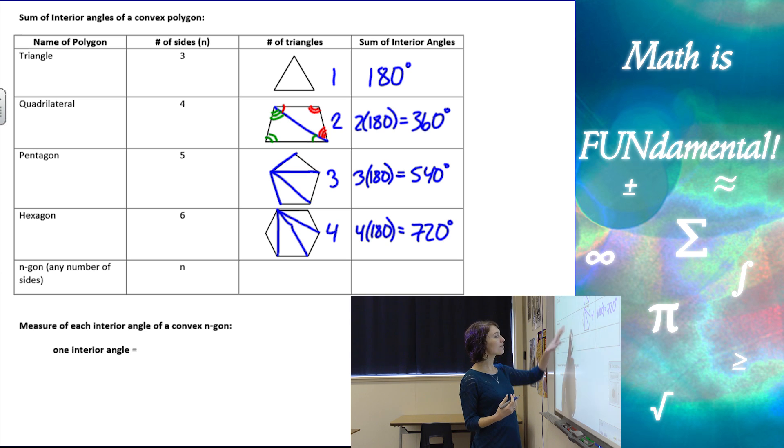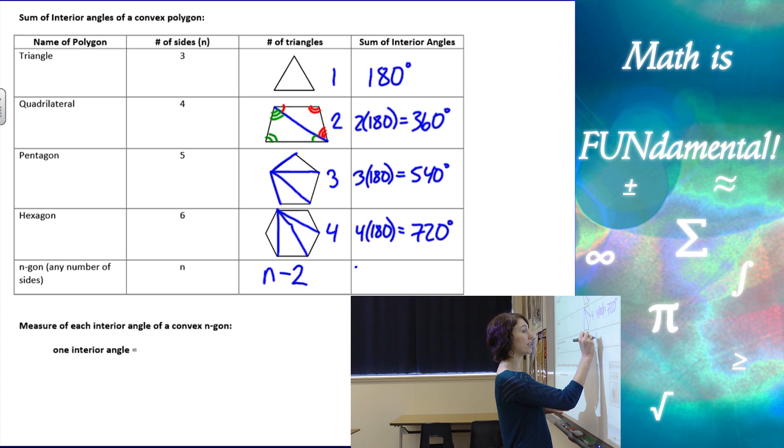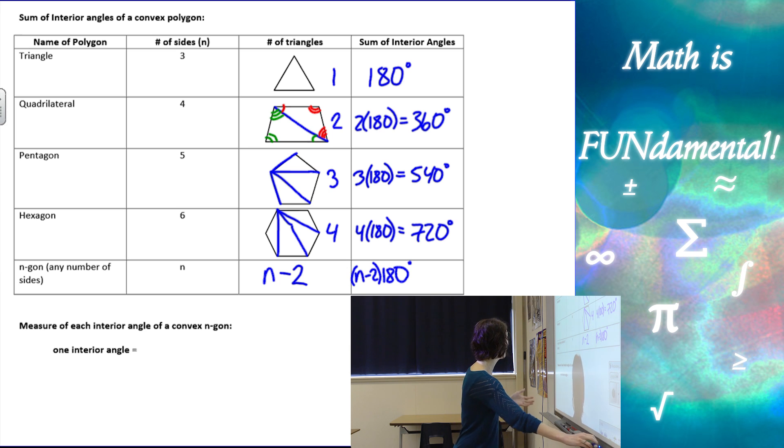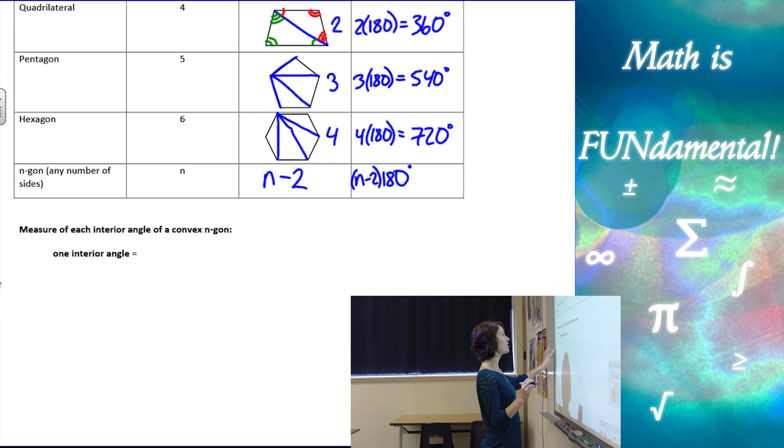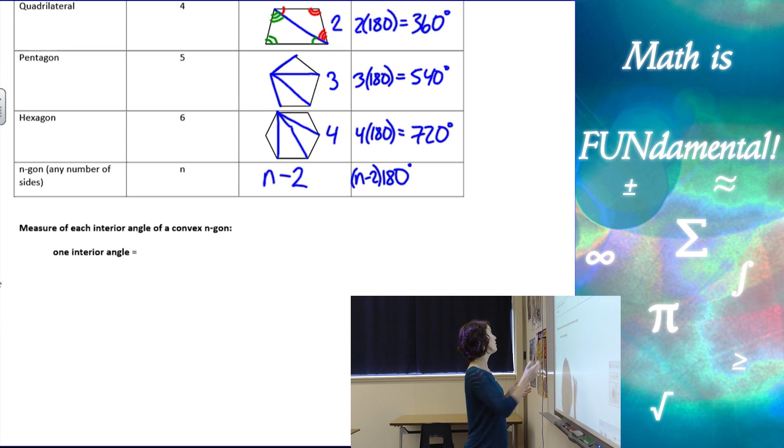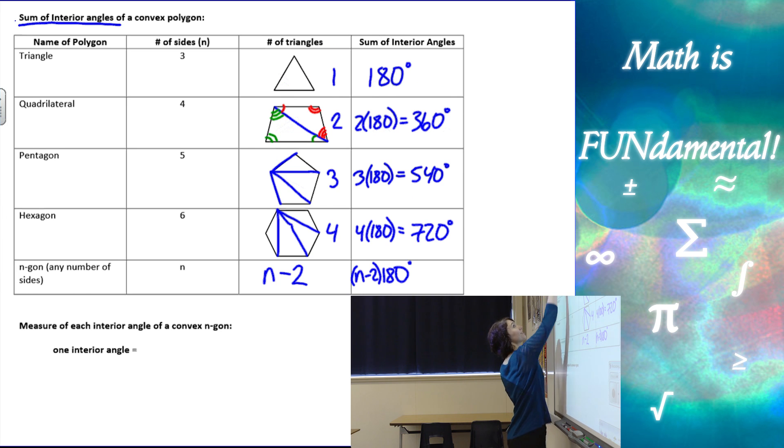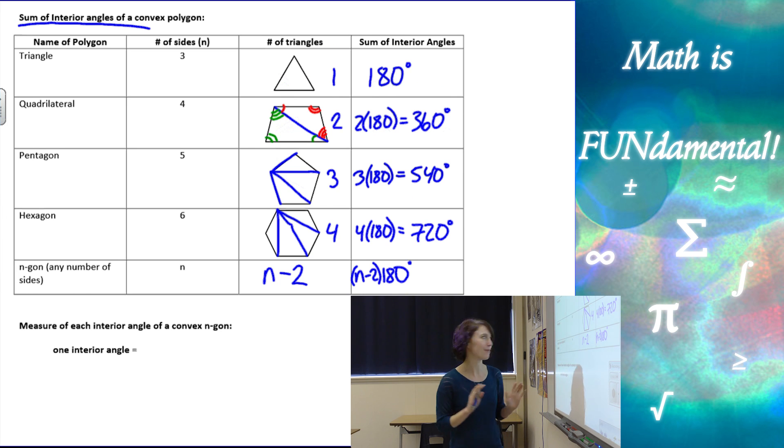Depending on the number of sides, let's say it's n, the number of triangles is going to be n minus two. If I take the number of sides and subtract two, I get the number of triangles. And so the sum of the interior angles is going to be (n-2) times 180 degrees. That's going to give us our formula for the sum of the interior angles of a convex polygon.